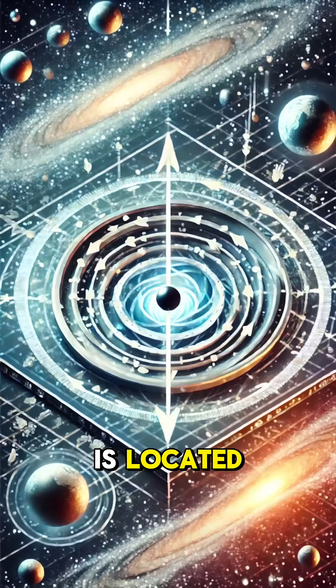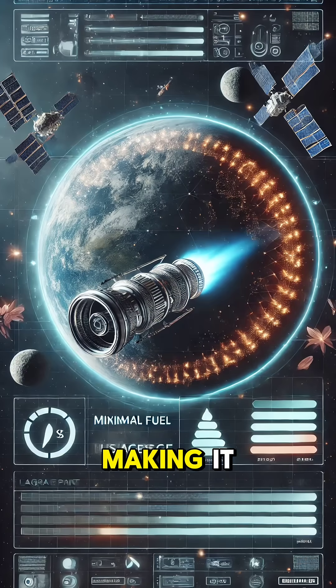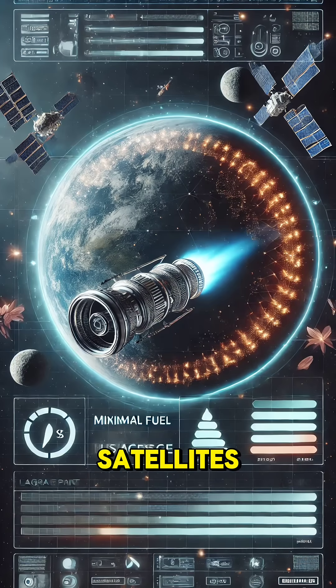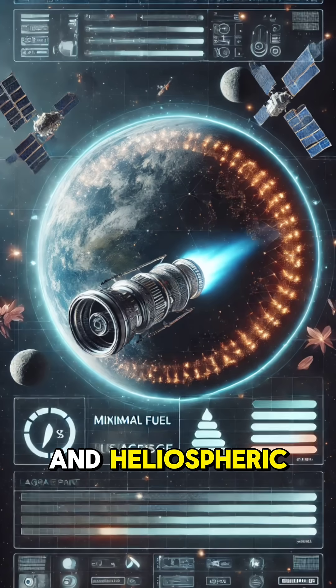For example, L1 is located between the Earth and the Sun, making it perfect for solar observation satellites like the Solar and Heliospheric Observatory.